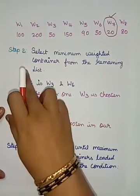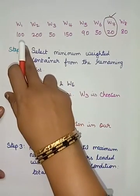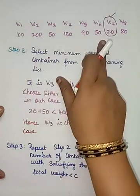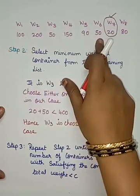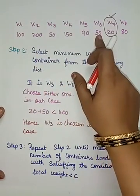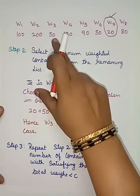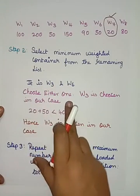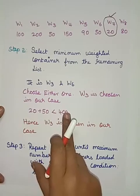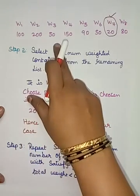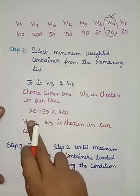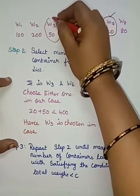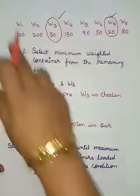Step 2: Select the next least weight container. The next least weights are 50, appearing for both w3 and w6. Since there's a tie, we choose w3. Loading w3 gives a total of 20 plus 50, which is 70. Since 70 is less than 400, w3 is loaded into the ship. W3 is ruled out and the remaining six containers are ready.